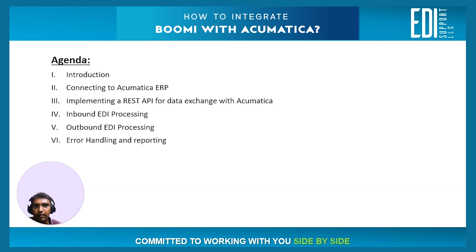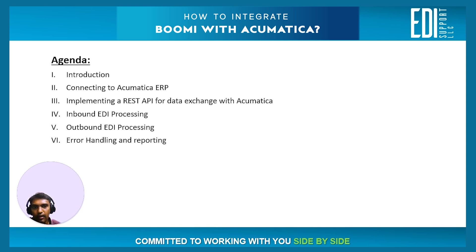BOOMI currently does not have an Acumatica application connector. Hence you need to use BOOMI's standard HTTP connector to obtain or submit data to Acumatica ERP. Acumatica uses OAuth2 protocol to authenticate or authorize any client to connect to it, and hence the BOOMI HTTP client needs to be configured for OAuth2. There are several OAuth2 workflows that Acumatica supports, but resource owner password credentials flow and authorization code flow are the two client types that the BOOMI HTTP client connector supports.